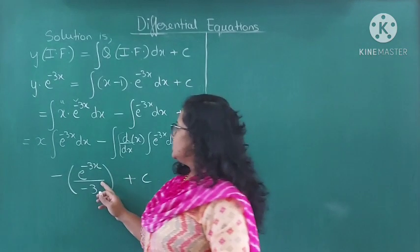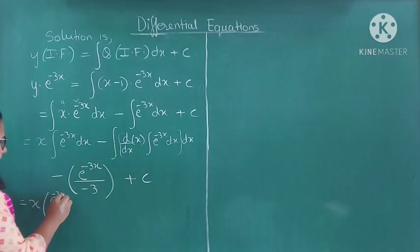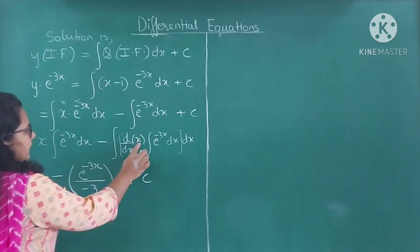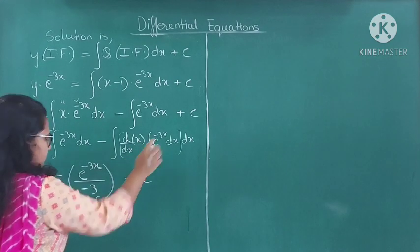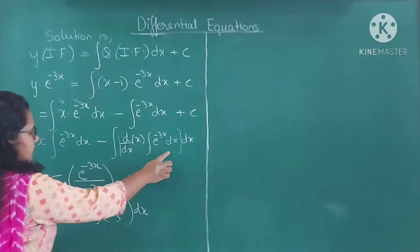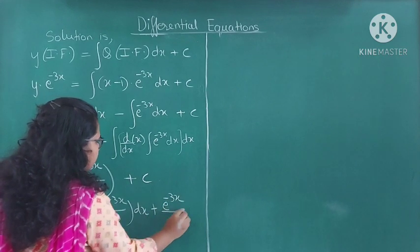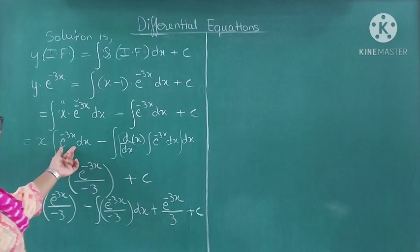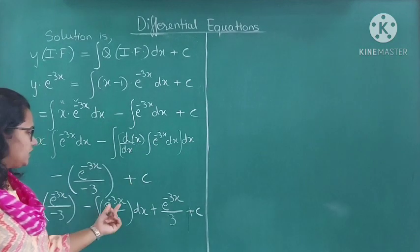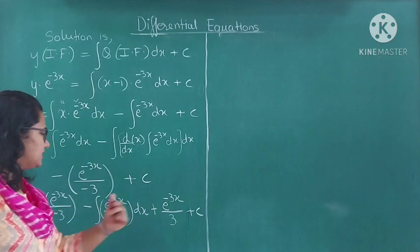So we use integration by parts for the first term, and the second term integration is e raised to minus 3x divided by minus 3 plus C as it is. We will solve this part further. x remains as it is; integration of e raised to minus 3x is e raised to minus 3x upon minus 3. Then minus the integral of: derivative of x is 1, and integration of e raised to minus 3x is e raised to minus 3x upon minus 3.